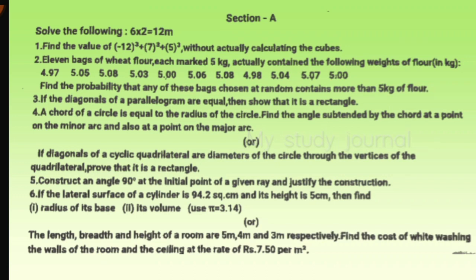Sixth question: if the lateral surface of a cylinder is 94.2 square centimeters and its height is 5 centimeters, then find the radius of the base and its volume. They gave the pi value also. We have an internal choice for the sixth question: the length, breadth, and height of a room are given and we have to find CSA and multiply with costs to get the answer.